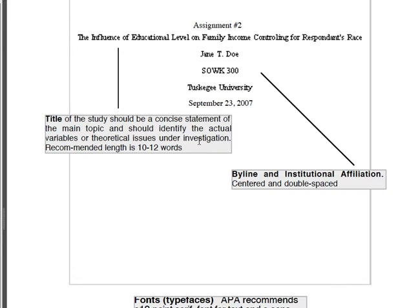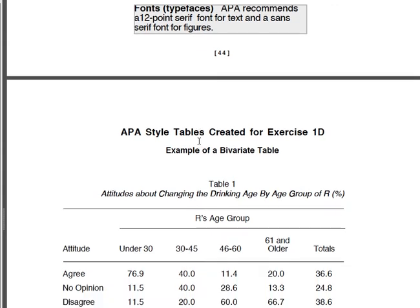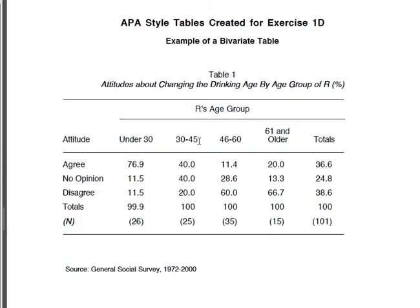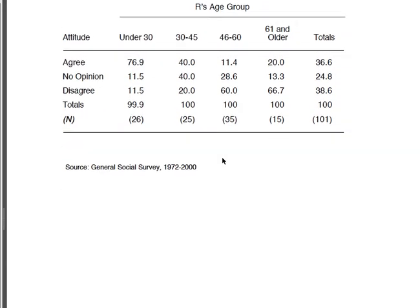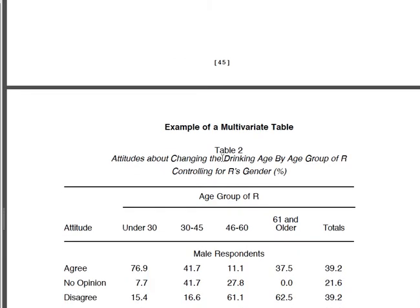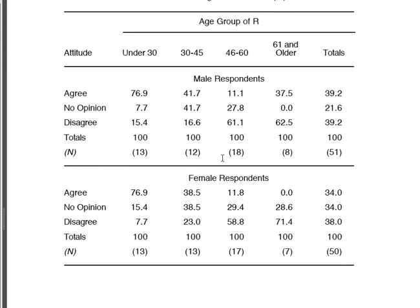All of this is contained in your book. Here's an example of what you're going to turn in for Exercise 1d. Your paper will consist of no more than three pages. Page one is your cover page — it's that easy. Page two is your bivariate table based on the SPSS data file output that you selected, and you'll also include a multivariate table.